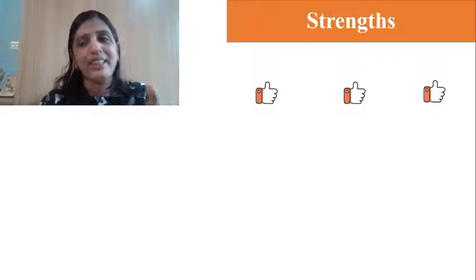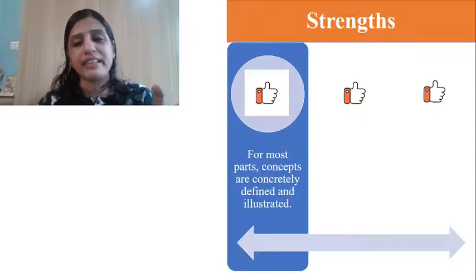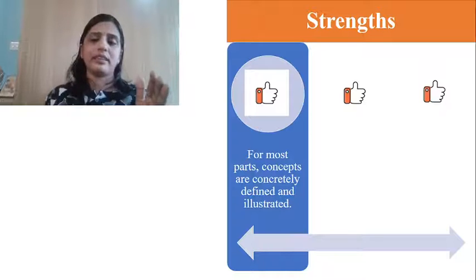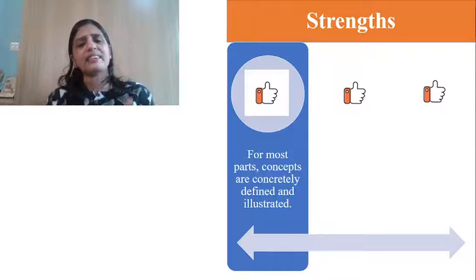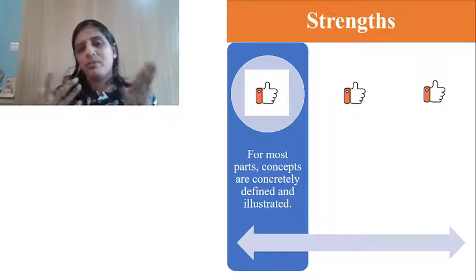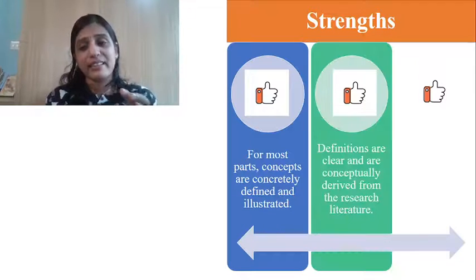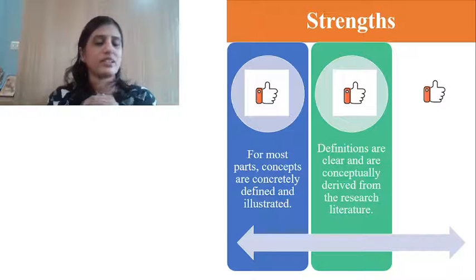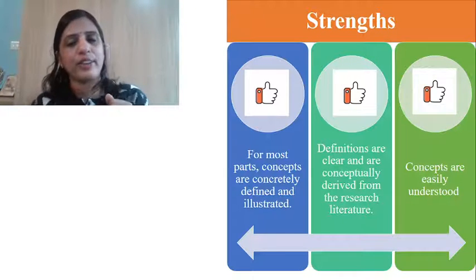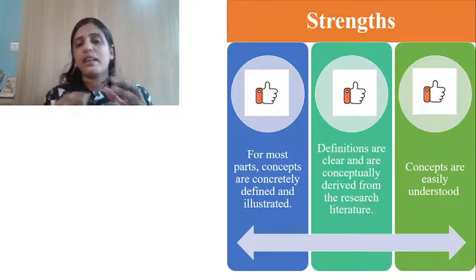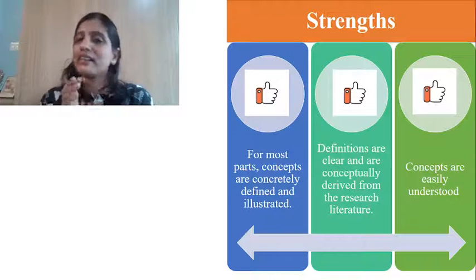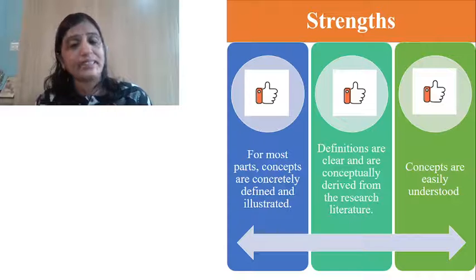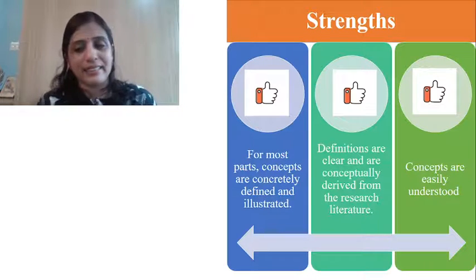We have come to the end of the theory — only the strengths, limitations, and meta-paradigm remain. The strength of King's theory: first, the concepts are concretely defined and illustrated. King took time to define stress, interaction, transaction, action, time, space, and perception. Definitions are clear, derived from research literature, and the concepts are easily understood.